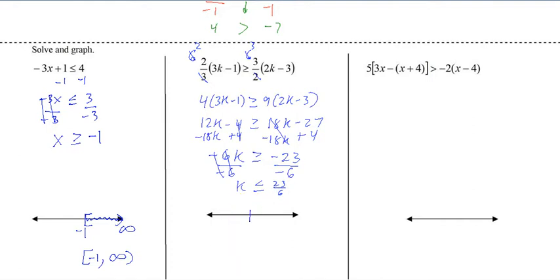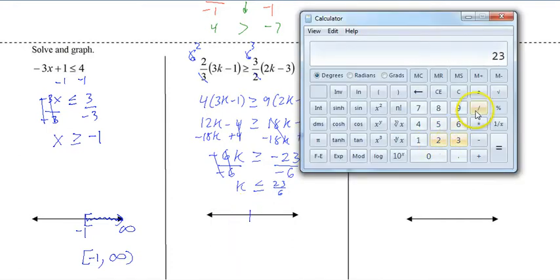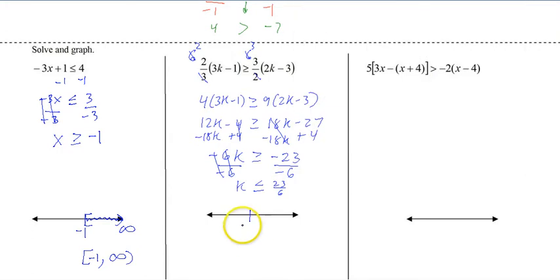So it's 23 over 6, but I don't want to use that. So if I do 23 divided by 6, it'll give me the decimal, 3.83 repeating. Put the repeater bar on there. We shade left because it's less. Put a bracket because it equals. Put negative infinity. So it's from negative infinity to 3.83 repeating. And that's our solution.